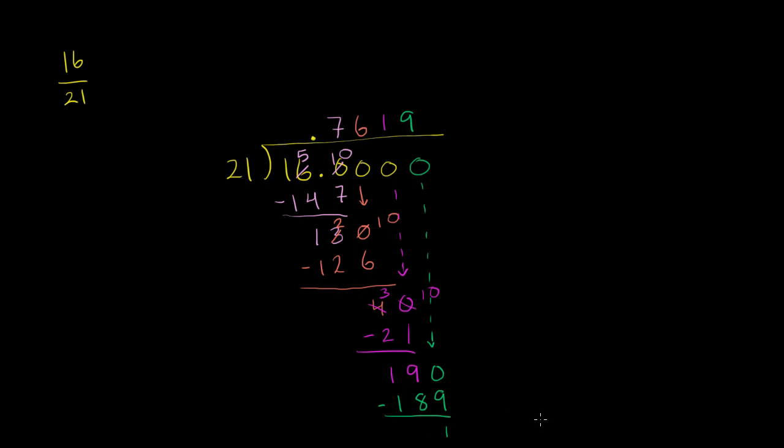And we could keep going on and on, but we already have enough digits to round to the nearest thousandth. This digit right over here is greater than or equal to 5, so we will round up in the thousandths place. So if we round to the nearest thousandths, we can say that this is 0.762.